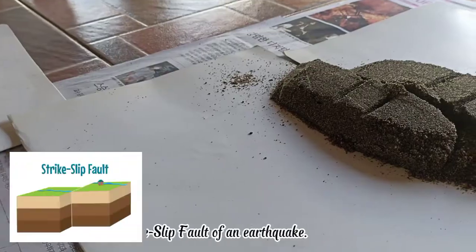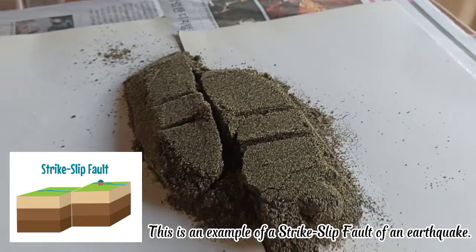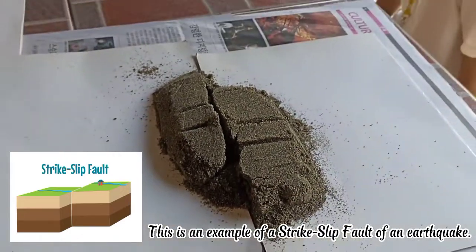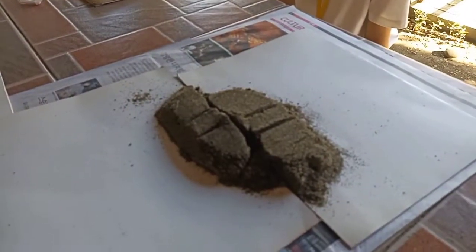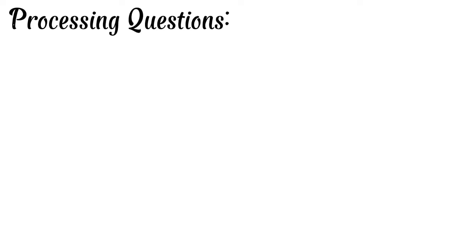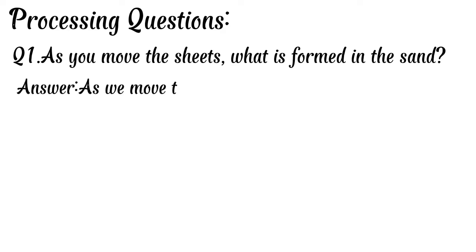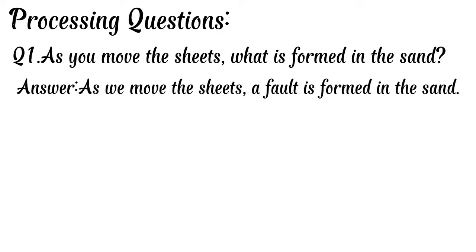This is an example of a strike-slip fault of an earthquake. Processing question number one: as you move the sheets, what is formed in the sand? As I move the sheets, a fault is formed in the sand.